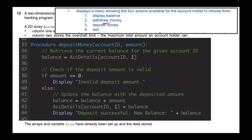For depositing money: retrieve the balance from account details, check if the deposit amount is valid (greater than zero) — otherwise display 'invalid deposit amount'. If all is okay, update balance as balance plus amount, set account_details[account_id][1] equal to the new balance, and display 'deposit successful' with the new balance. We don't need a separate procedure for exit — that's just an option in the menu.